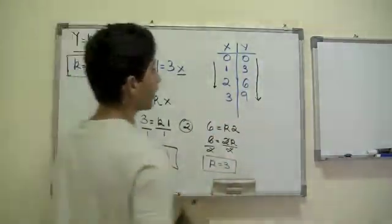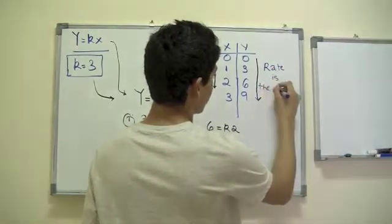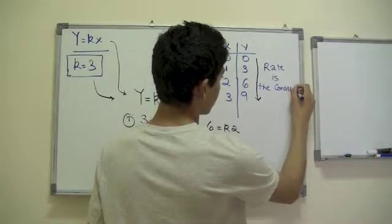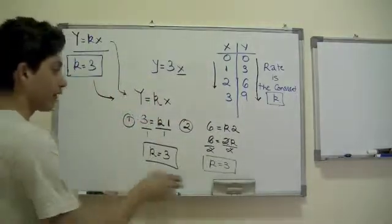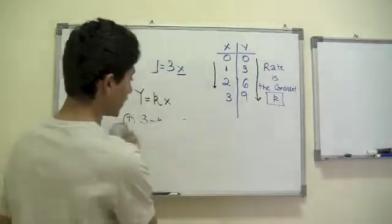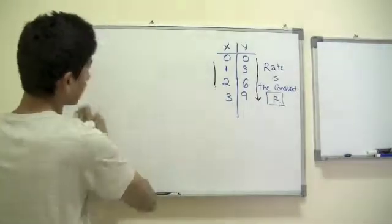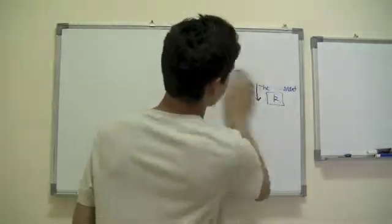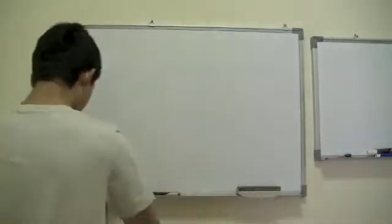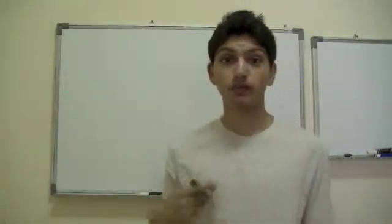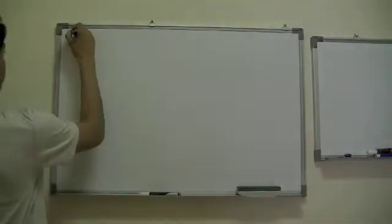The rate here is the constant k — that's the main point we are trying to prove. So let's start solving some examples to get the concept, because if I just keep explaining concepts some people might get confused about what I'm talking about.